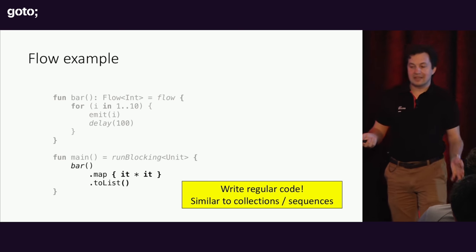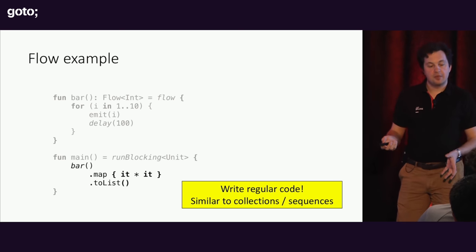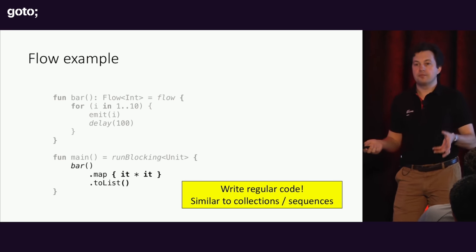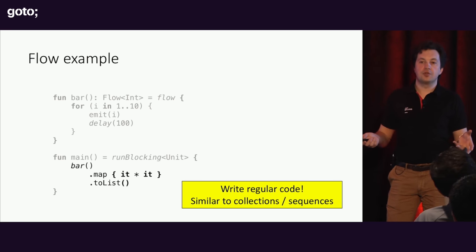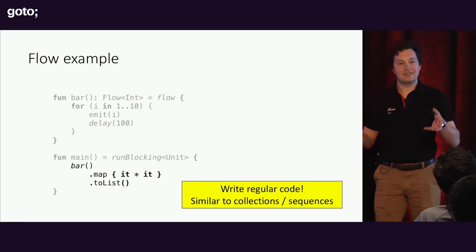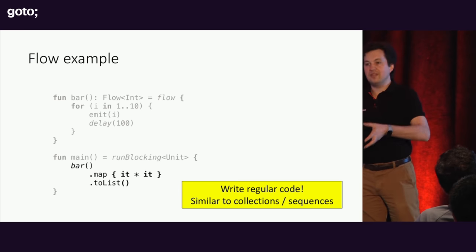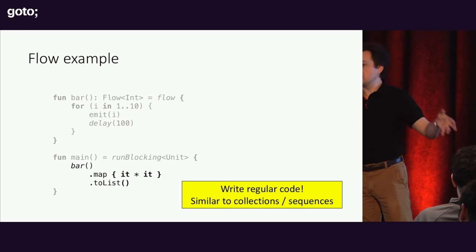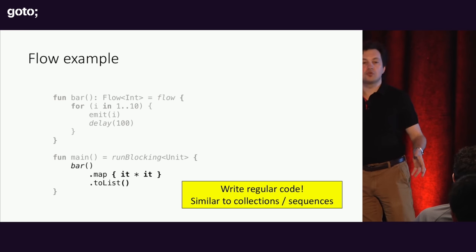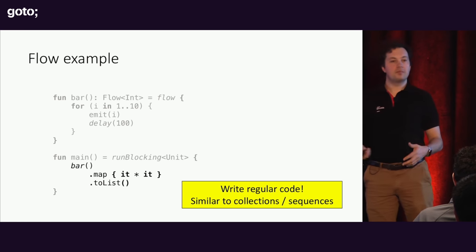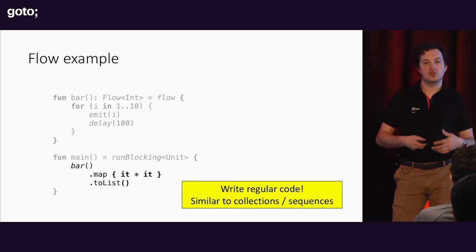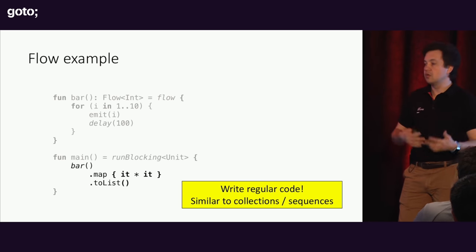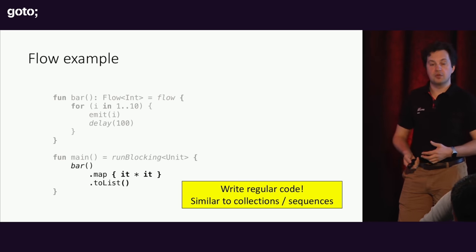That's it — the general promise of Kotlin coroutines is that you write asynchronous code the same way you write the rest of your code. It shouldn't look different, and it shouldn't require you to learn lots of new concepts.